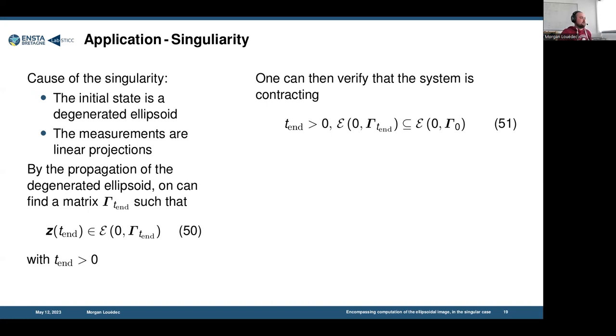Here are the singularities caused by the initial sets and the measurements. But by applying the modification of the algorithm, we're still able to find a reachable set. In my case, for example, show that this reachable set is included in the initial set and that the system has stable cycles where it has to re-enter or be in the initial set frequently.